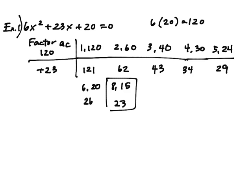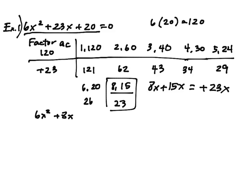So what do I do? My next instruction is split the middle term with the correct factors. The factors are 8 and 15, so I'm going to change that into 8x plus 15x. What does that equal when you add them? You get positive 23x. That resembles that middle term. So we have 6x squared plus 8x plus 15x plus 20 equals 0.